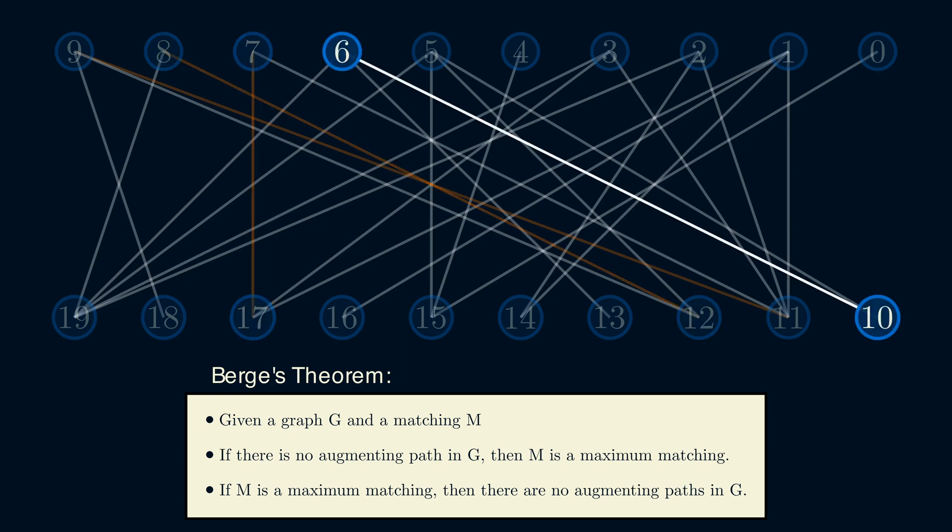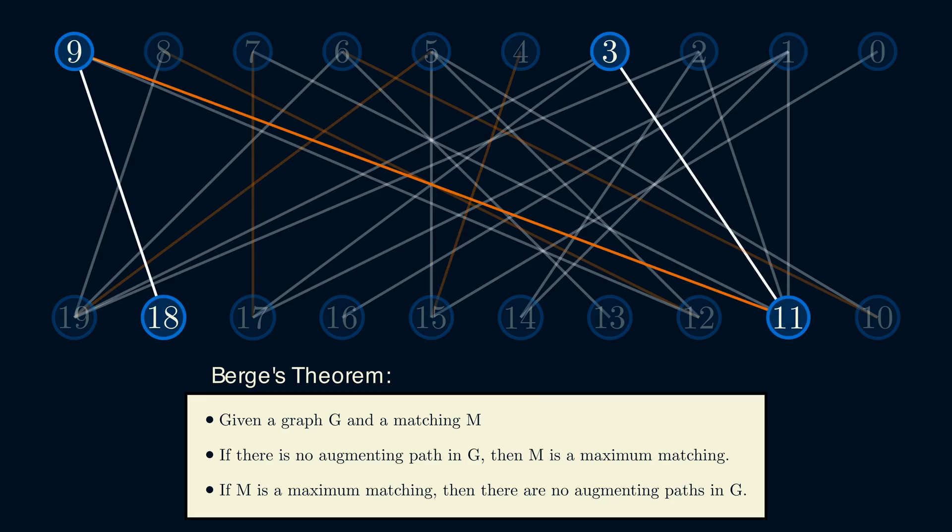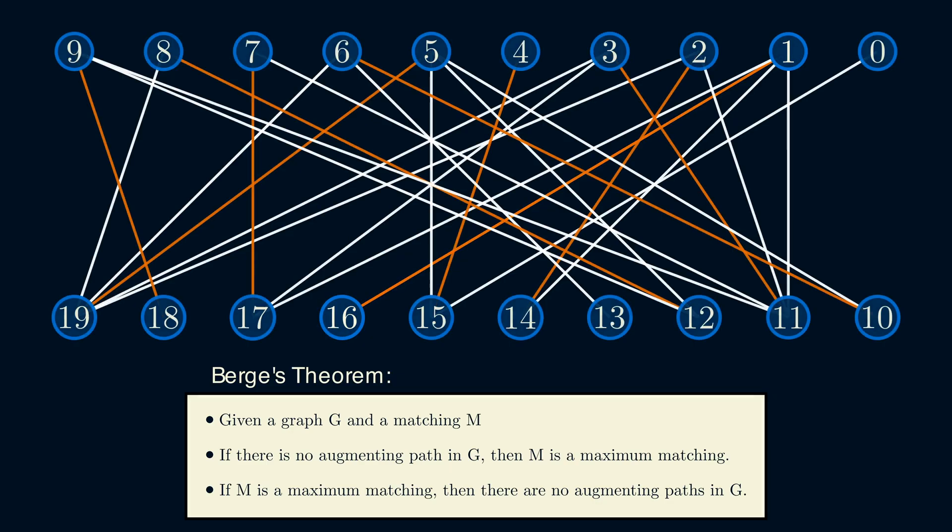So this theorem is saying finding augmenting paths is all we need to do. Our algorithm here of just finding an augmenting path will always terminate in a maximum matching. Also, for this theorem, G does not have to be bipartite. This applies for all graphs. Lots of matching algorithms tend to just be, how do we find an augmenting path most efficiently?